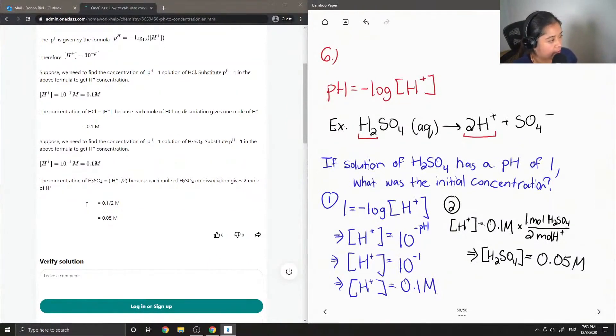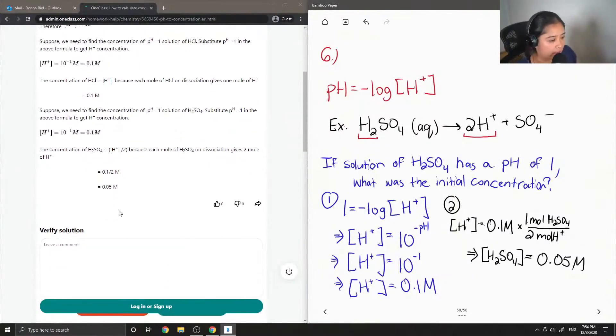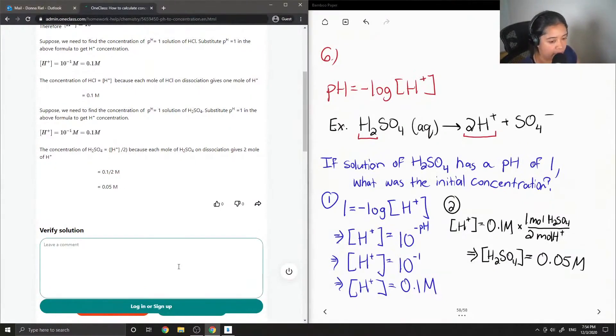Suppose we need to find the concentration of pH equals 1, a solution of H2SO4. Substitute pH equals 1 in the above formula to get the H+ concentration. This is the same as what we did. The concentration of H2SO4 is equal to the concentration of protons divided by 2, because each mole of H2SO4 on dissociation gives 2 moles of H+. And they also got 0.05 molar sulfuric acid solution. The solution is correct.